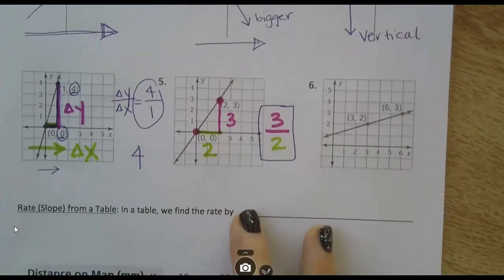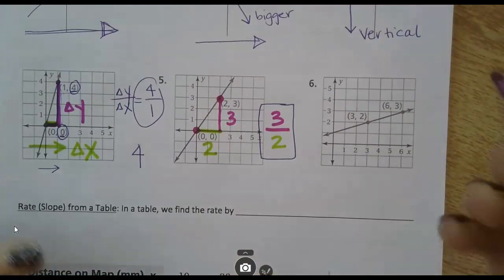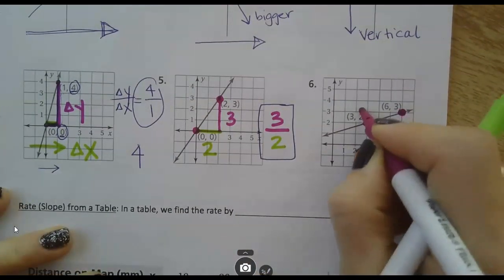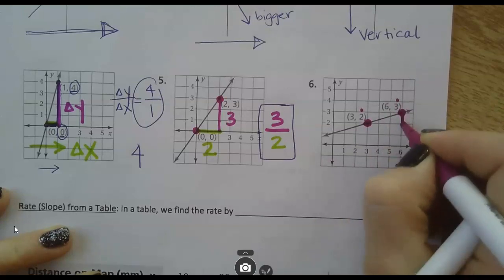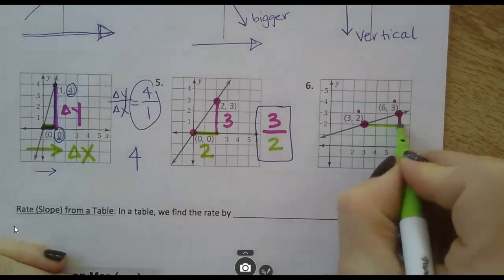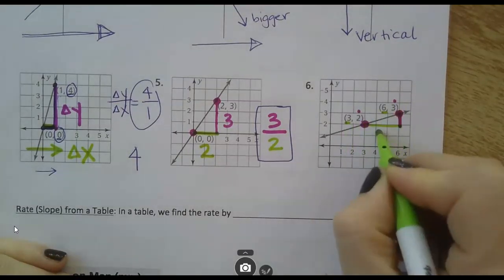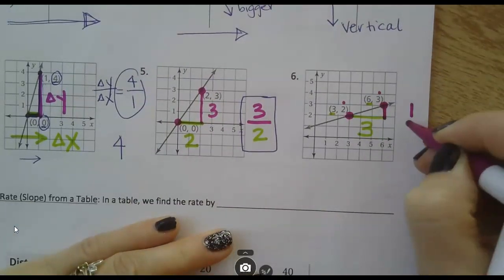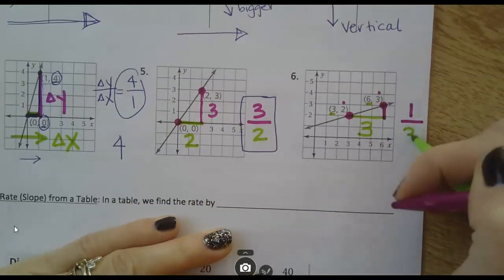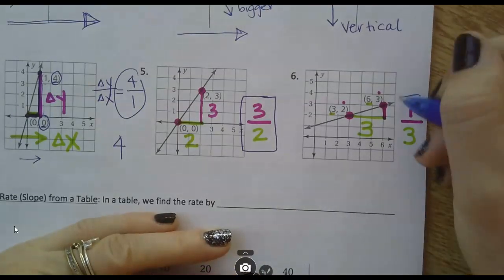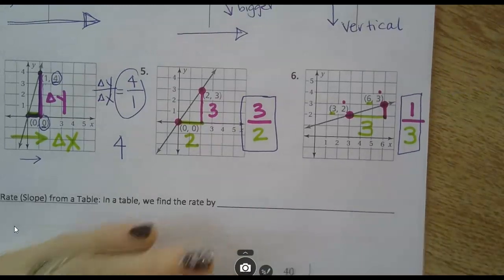Let's do one more. In this next one, change in y - how much did I go up from here to here, from two to three? I can see I just went up one. And then how much did I go over from three to six? I went over three. And when I write that as a fraction, up one over three, I get the fraction one-third. This has a slope of one-third.